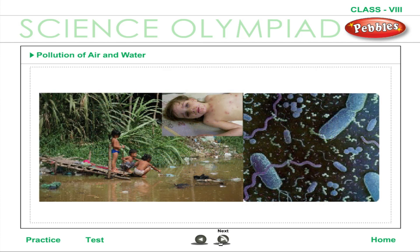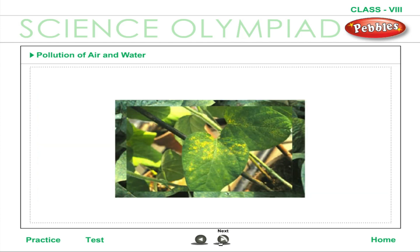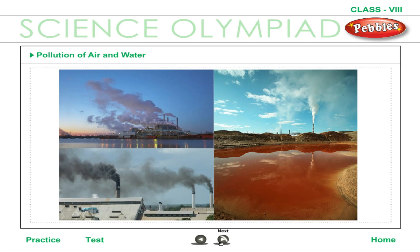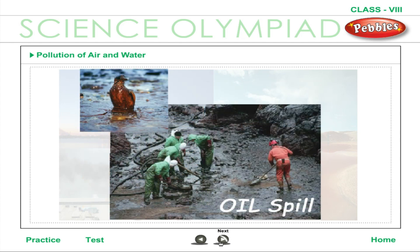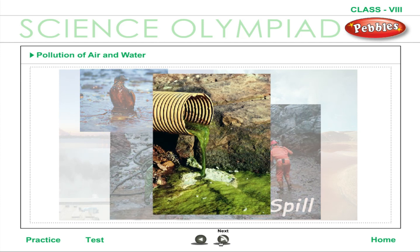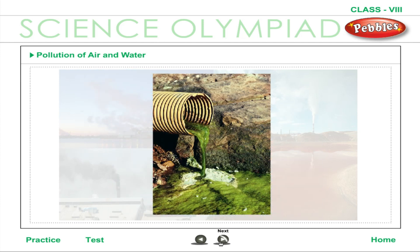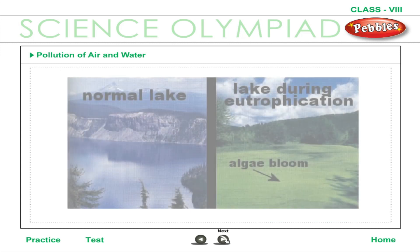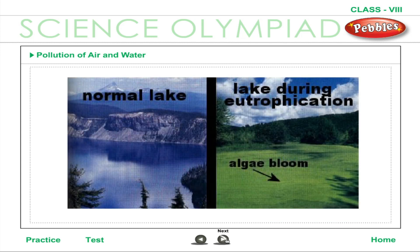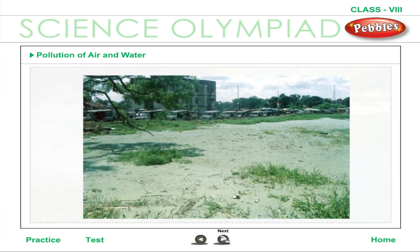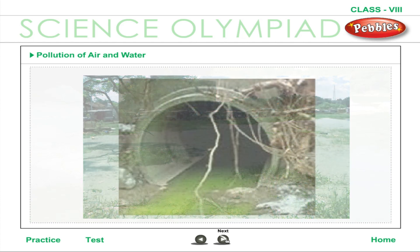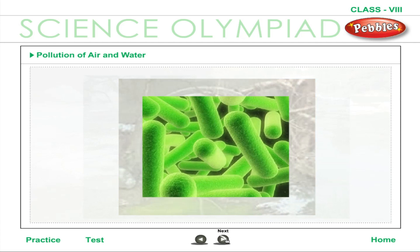Disease-causing organisms, agricultural and industrial chemicals, oxygen-demanding organic waste, and hot water are some of the major categories of water pollutants. The accumulation of pollutant nutrients in water bodies and the rapid growth of algae that results is called eutrophication. The algae cut off the supply of light to other organisms, and their decomposition by bacteria uses up dissolved oxygen.